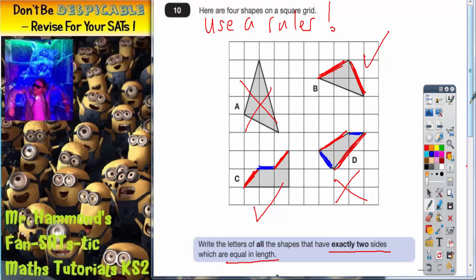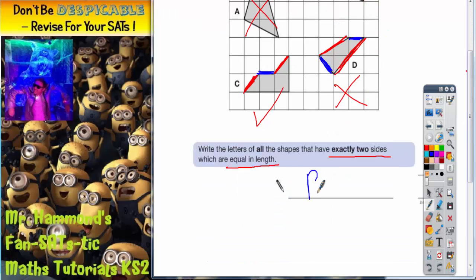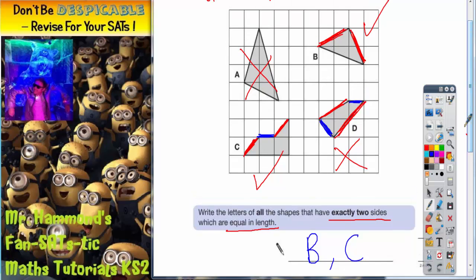So the only two that we need to write on the answer space is shape B and shape C. But again the advice there is to make sure that you use a ruler.